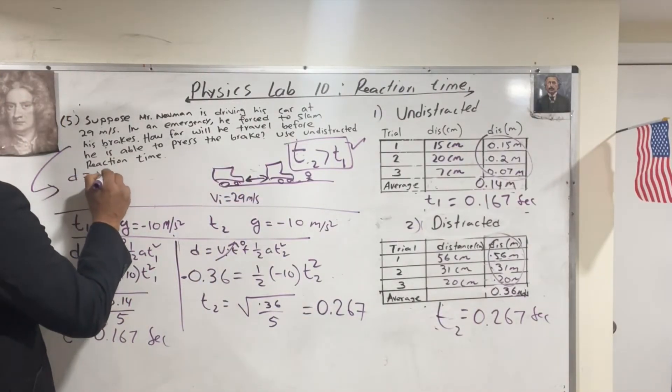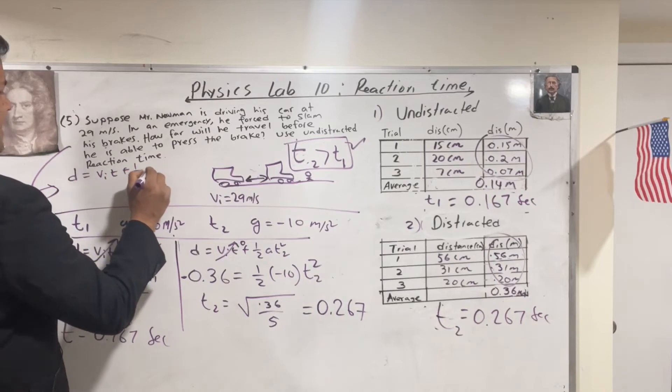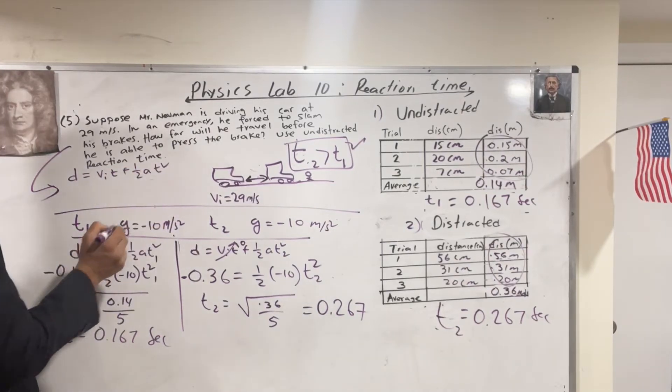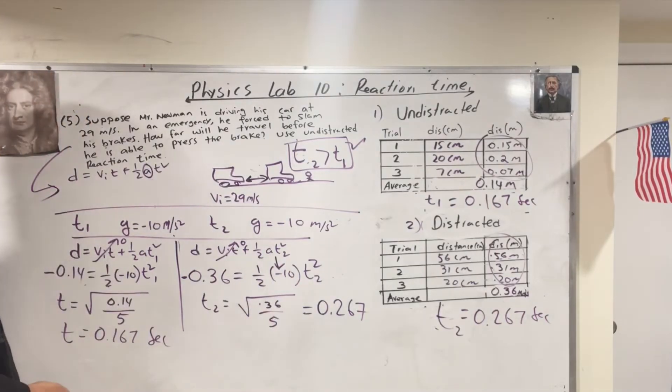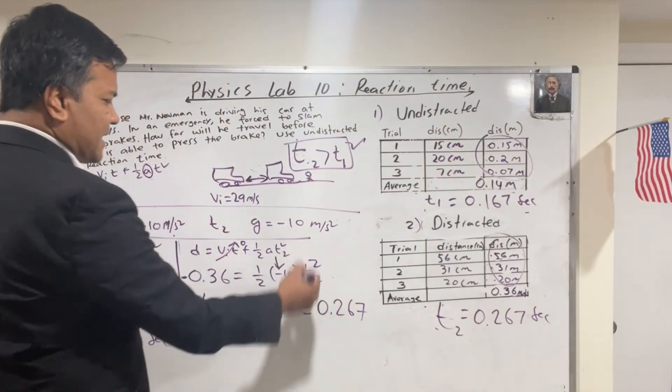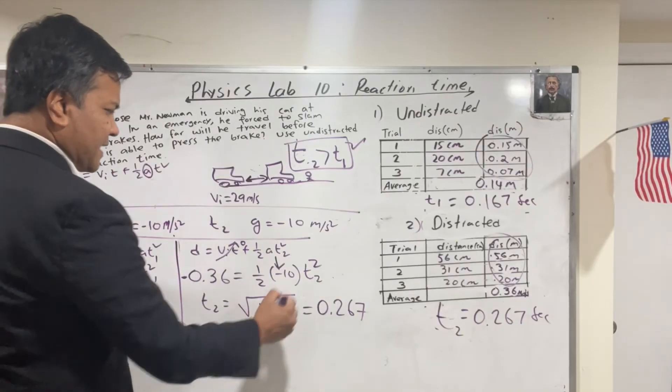So again, D is equal to V₀T plus half AT squared. Many people put negative 10 over here. Hey, look. This one is a vertical motion. This one is vertical motion.